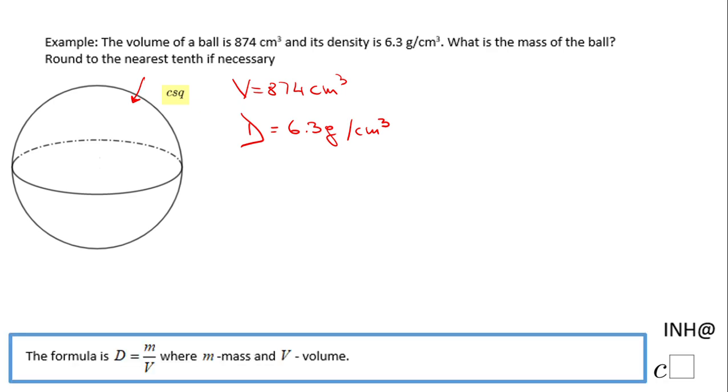For that reason I'm going to use this formula you see here, which says density equals mass over the volume. So in this formula I'm going to plot the information I have. I know the density is 6.3 grams per centimeter cubed.